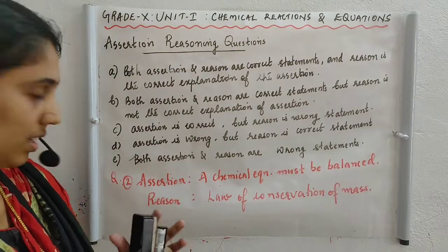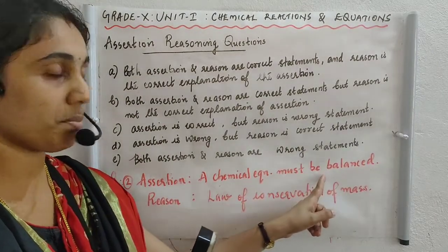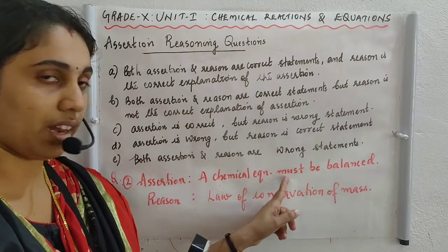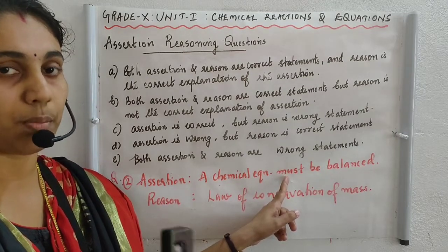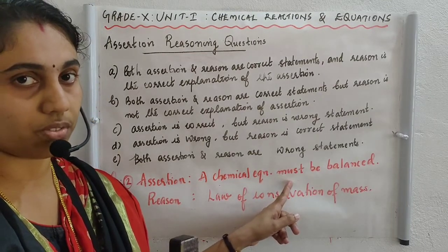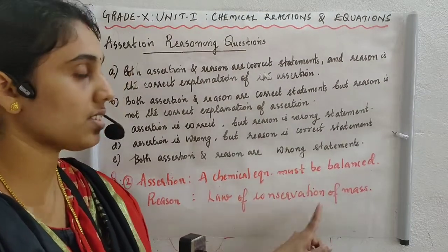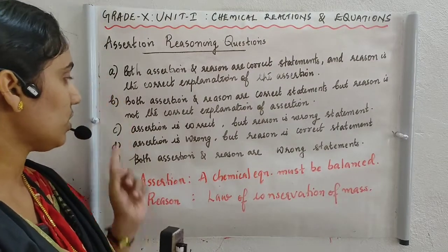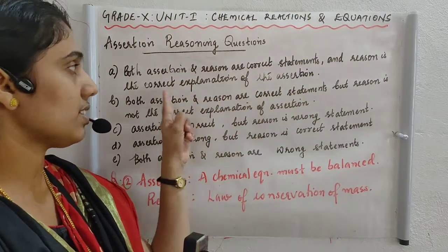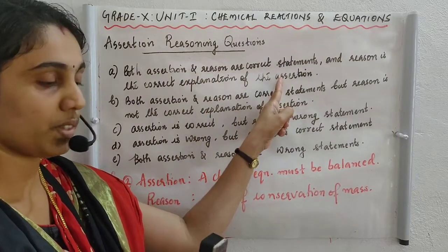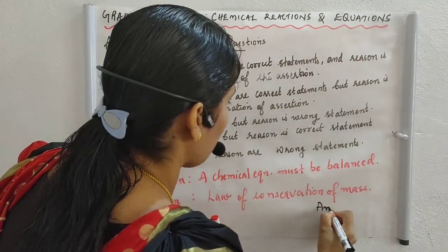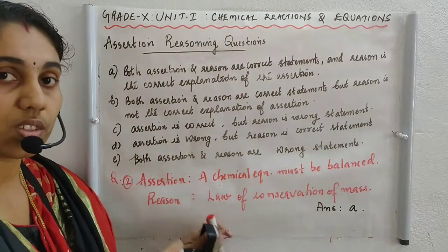Question 2 — Assertion: a chemical equation must be balanced. Reason: law of conservation of mass. We balance a chemical equation to make the number of atoms equal on both sides, in order to obey the law of conservation of mass. So both the assertion and reason are correct, and reason is the correct explanation of the assertion. The answer is option A.